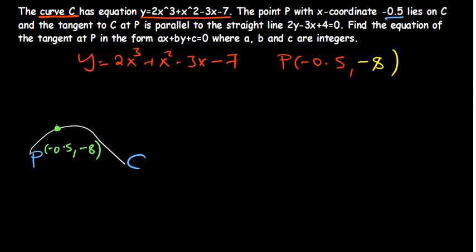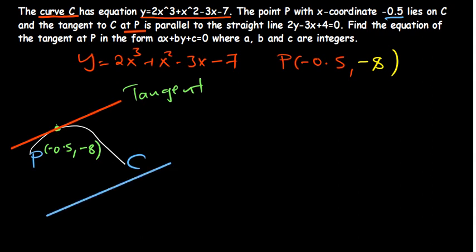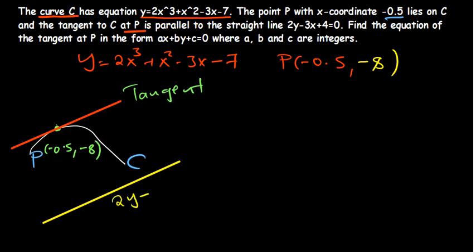The tangent to curve C at point P is parallel to a straight line. That tangent at P is parallel to this other straight line whose equation has been given as 2y minus 3x plus 4 equals 0. We need to find the equation of the tangent at P in the specified form.